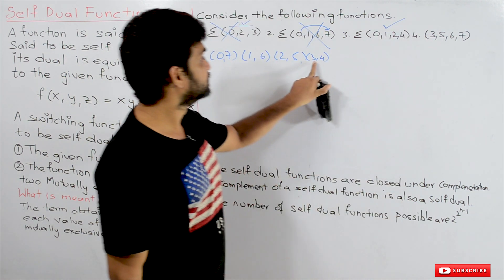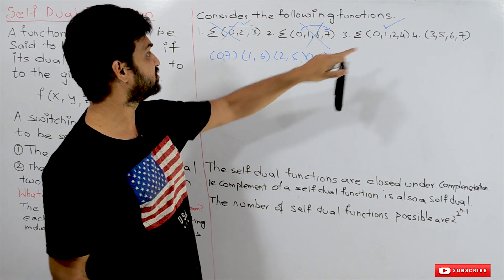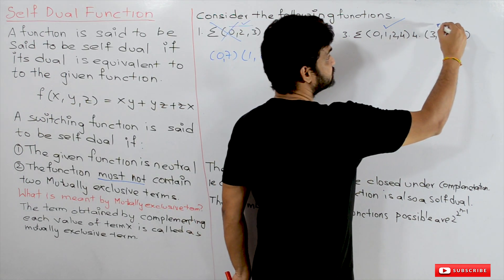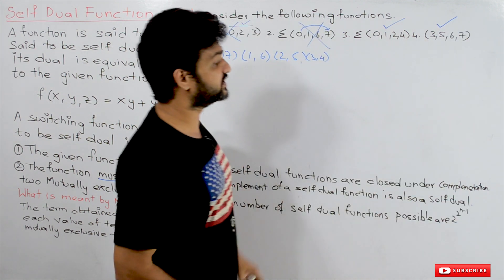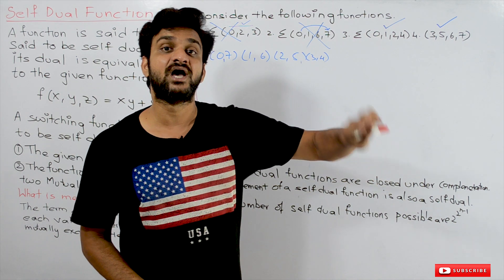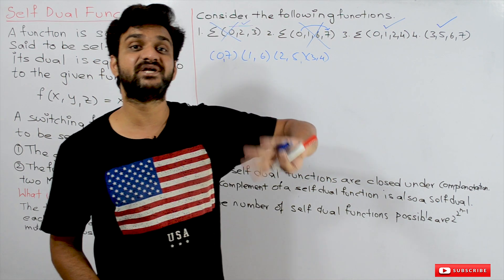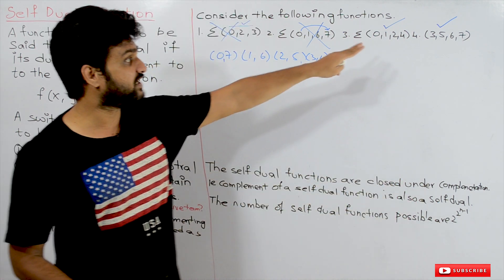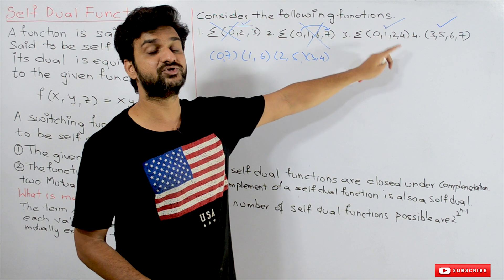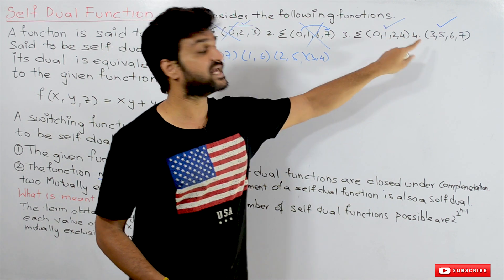Consider the function with minterms (0, 1, 2, 4). Check: minterm 0 — is 7 present? No. Minterm 1 — is 6 present? No. Minterm 2 — is 5 present? No. Minterm 4 — is 3 present? No. No mutually exclusive pairs exist, so this is a self-dual function. The function has four minterms with three variables, satisfying the neutral function condition. Since no mutually exclusive terms are present, it is confirmed as a self-dual function.